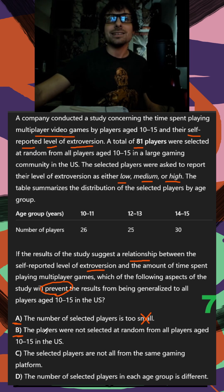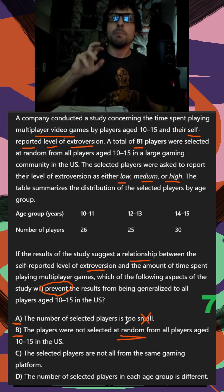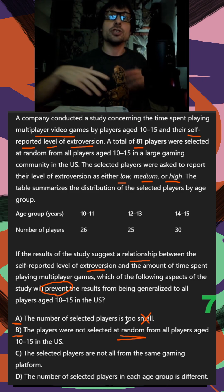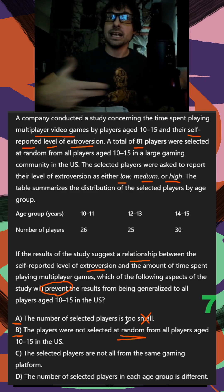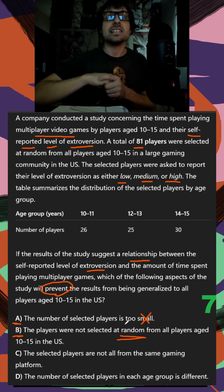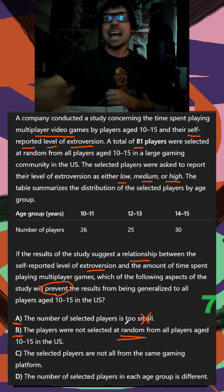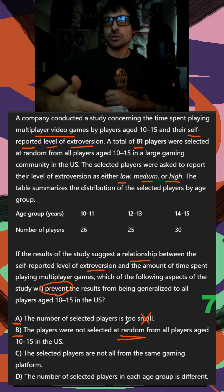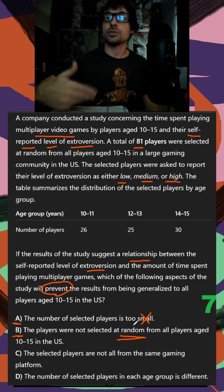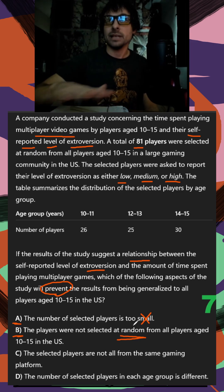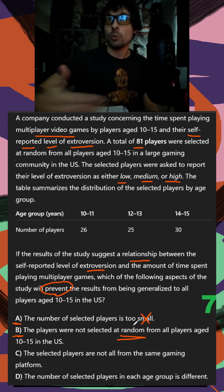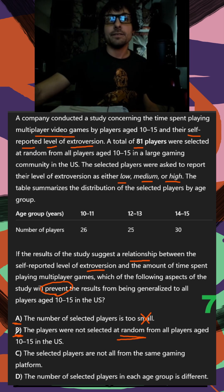In B, the players were not selected at random from all players in this group. What that could mean bias-wise is instead of choosing random people playing games in this age group, they specifically went to clubs called something like 'highly extroverted multiplayer gamers.' That means you're specifically choosing people that are probably higher in extroversion instead of random. So B is definitely going to cause a lot of bias — it's almost certainly the correct answer.